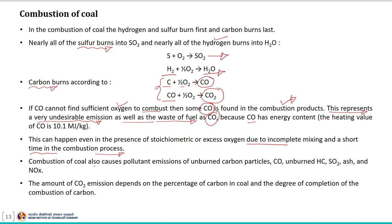Combustion of coal also causes pollutant emissions of unburnt carbon particles, carbon monoxide (CO), unburnt hydrocarbons, SO₂, ash, and NOₓ. The amount of CO₂ emission mainly depends on the percentage of carbon in the coal and the degree of completion of carbon combustion. CO that exits without further combustion also contributes to pollution.